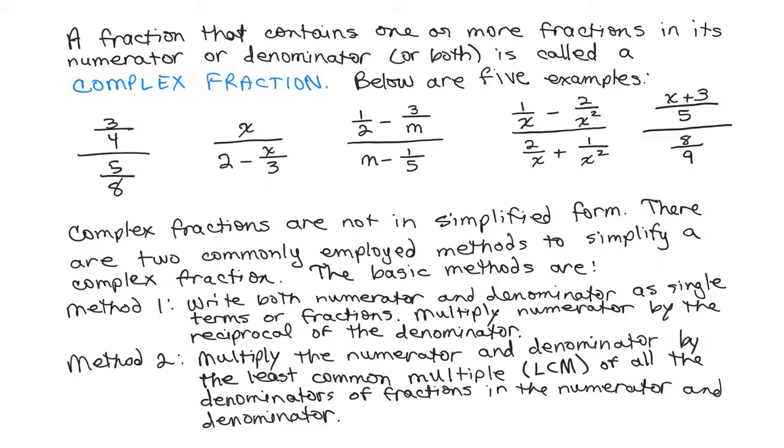For the rest of them, method two is actually easier for most people. You multiply the numerator and denominator of the complex fraction by the least common multiple of all the denominators of fractions in the numerator and denominator. And this eliminates the complex fraction in the first step.